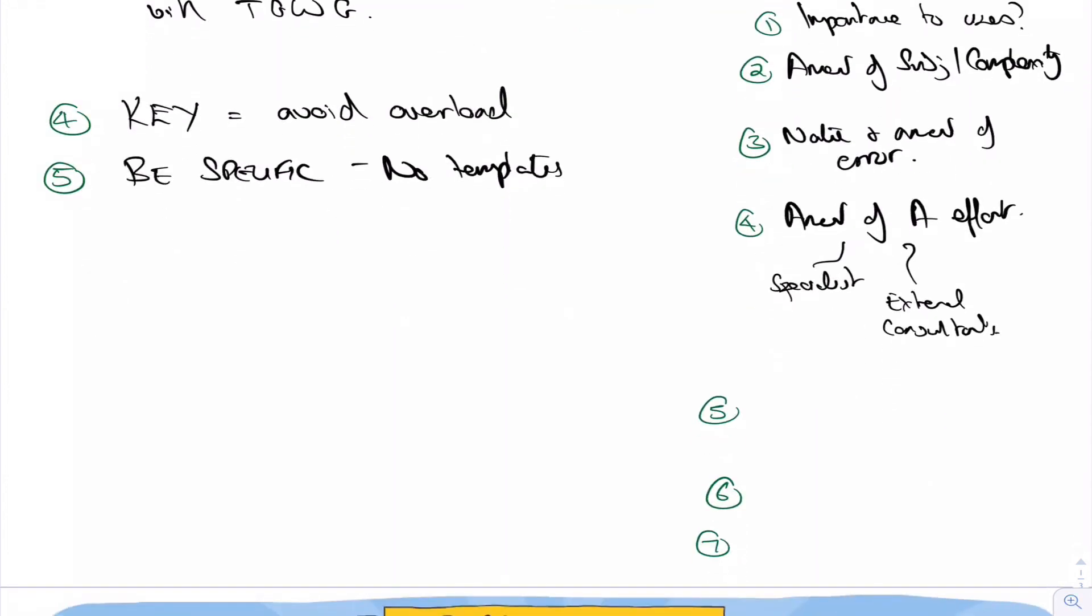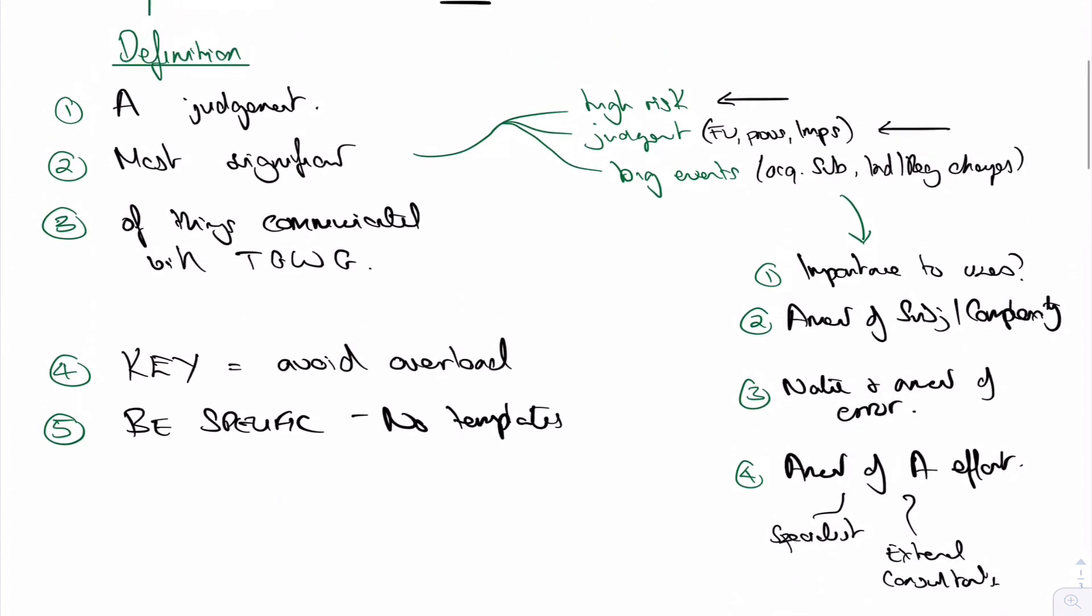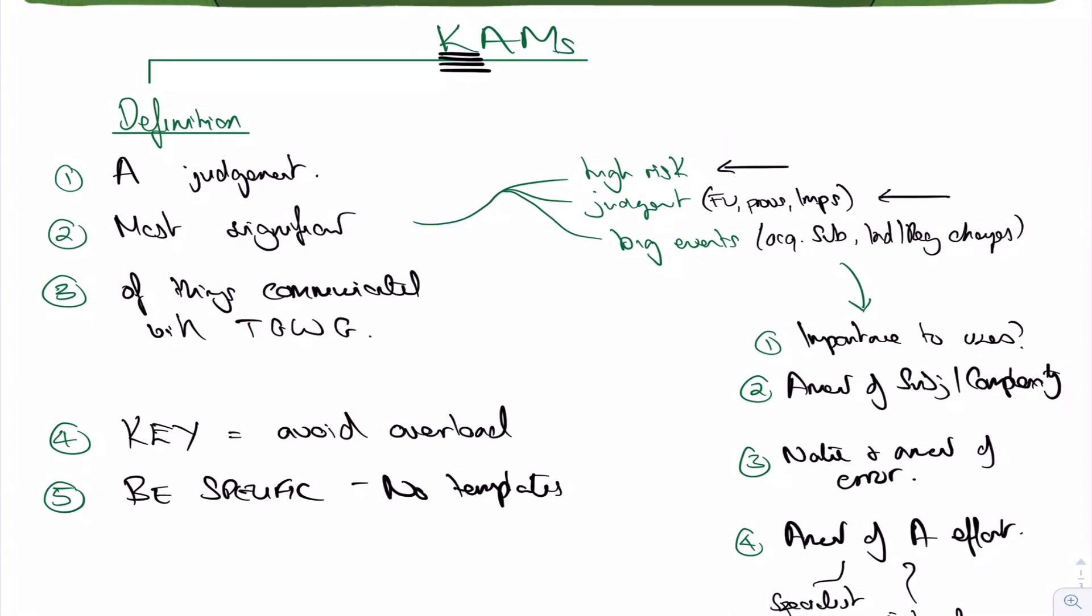Other things that might make us decide whether it's significant or not was how many difficulties did we have in doing the audit procedures, in doing our substantive tests on the matter. Were there any control deficiencies linked to this matter? Did this matter have any other effects? You might be looking at long-term contracts and therefore the effect on revenue as well. All those sorts of things will help you decide what are the key audit matters.